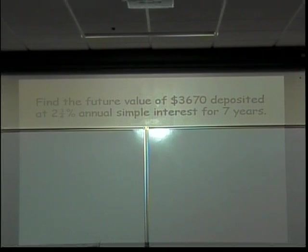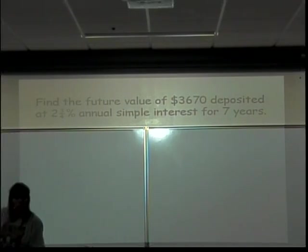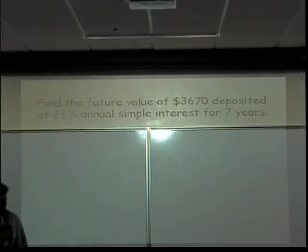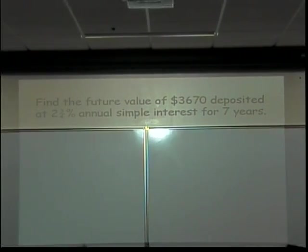Here it says: find the future value of $3,670 deposited at two and three-quarter percent annual simple interest for seven years. Which formula do I use? Future value. What's my clue? The words 'future value.' The thing you want to do is look for the clue words in the problem.